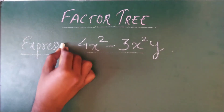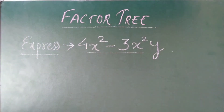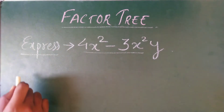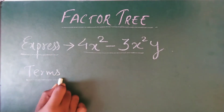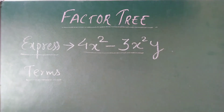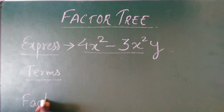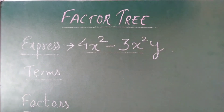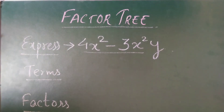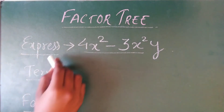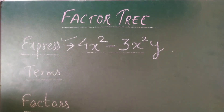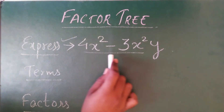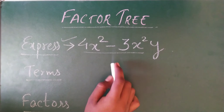After writing the expression, the next step is to write the terms of that expression, and then you write the factors. So the order is: first the expression, then the terms, then the factors. Our expression is 4x² minus 3x²y.